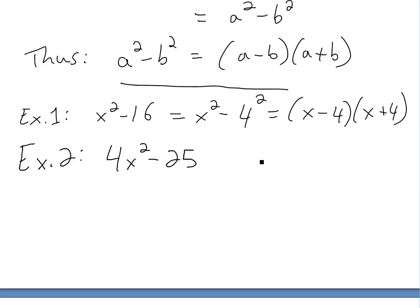Example 2, 4x squared minus 25. The only difference is we have a coefficient in front, but this could be written as a square. We could write it as 2x squared, which expands to 4x squared, and this is minus 5 squared. So now this is our new a, this is our new b, and we write it exactly like above: 2x minus 5 times 2x plus 5. You've just got to find the squares of it and then do this.